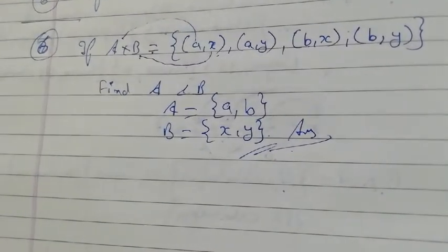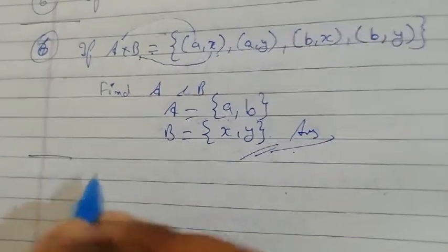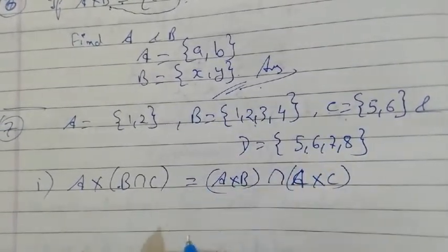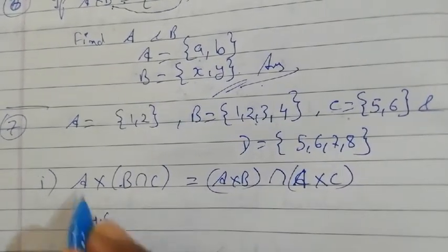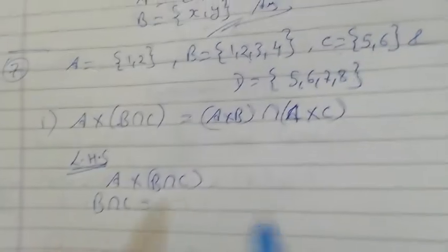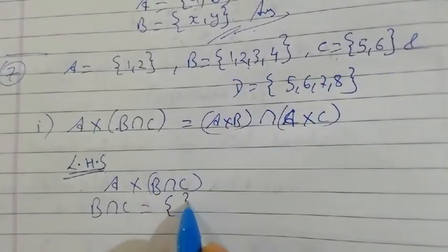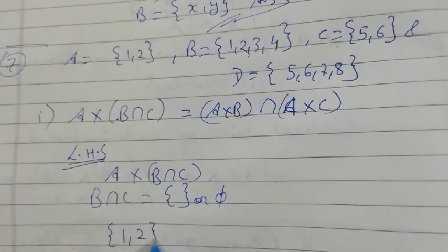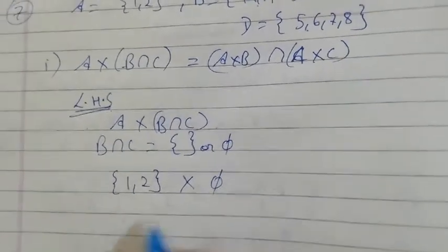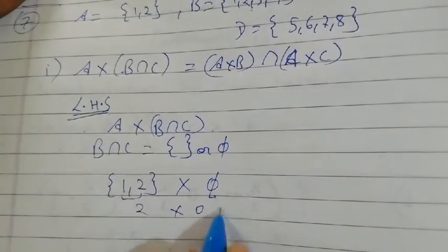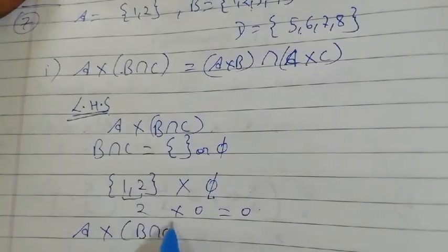You can apply set theory in Cartesian product too. In Question 7, four sets are given and we have to verify a relation. For LHS: find A×(B∩C). First compute B∩C — the common elements in B and C. Since there are no common elements, B∩C = φ (null set). So A×φ: set A has two elements and φ has zero, so the product gives φ.